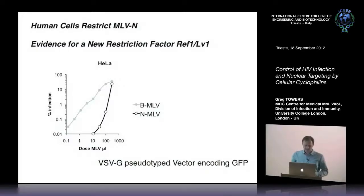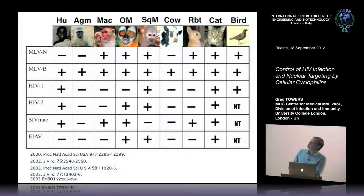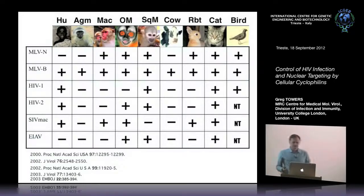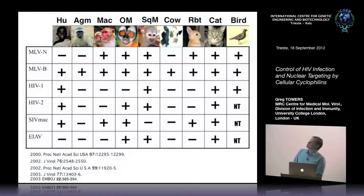We realized there was some mechanism that cells were using to protect themselves from infection, active against NMLV but not BMLV, based on a single amino acid in capsid. I then collected viruses from gene therapy colleagues - HIV-1, HIV-2, SIV MAC, equine infectious anemia virus (a horse lentivirus) - and titrated them on cells from different species: humans, old world monkeys, new world monkeys, cows, rabbits, cats, and birds, to work out whether there was this pattern of differential infection across viruses and species.